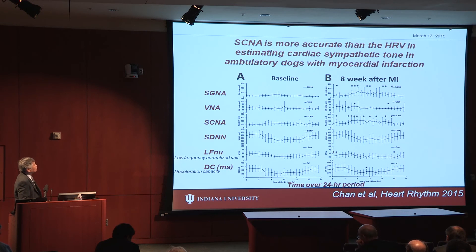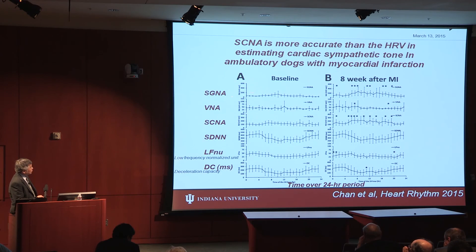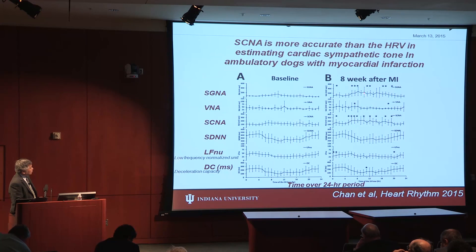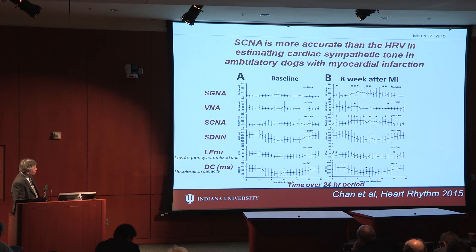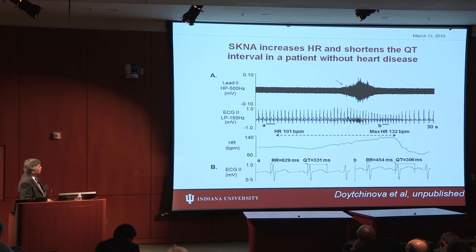Regarding the most commonly used non-invasive method — heart rate variability — we measured SCNA before and after myocardial infarction, showing increased subcutaneous nerve activity as expected, consistent with SGNA. SDNN shows a circadian variation before and after AMI, but the changes before and after myocardial infarction are small. Several other HRV parameters also show circadian variation, but the post-MI changes are much smaller than what we can detect with skin sympathetic nerve activity. This paper was just posted online.